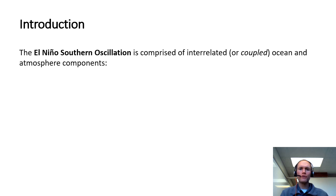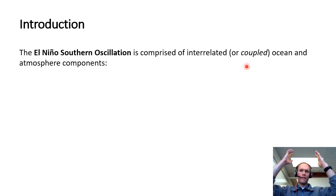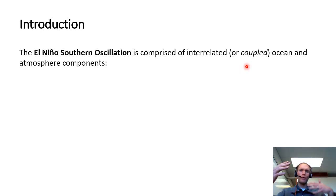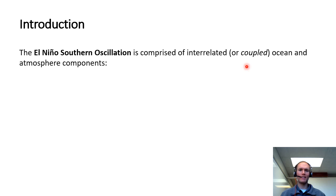We introduced this idea of the El Niño Southern Oscillation being comprised of interrelated, or what we call coupled, ocean and atmosphere components. That means that the ocean drives the atmosphere above, while the atmosphere drives the ocean below. The two act hand in hand with each other — it's kind of like the age-old question of the chicken and the egg. In this case, they both act and come at the same time with respect to each other.